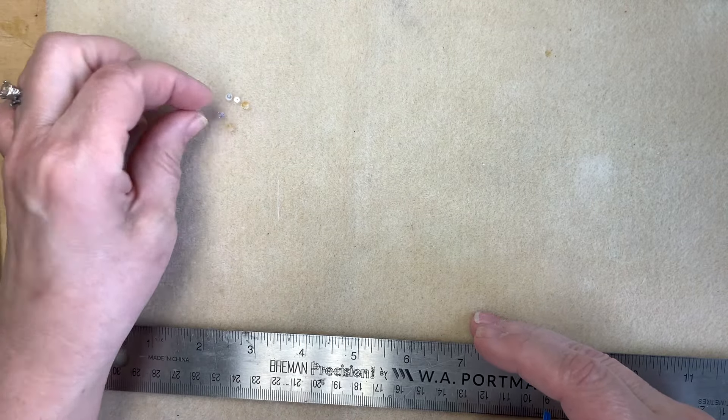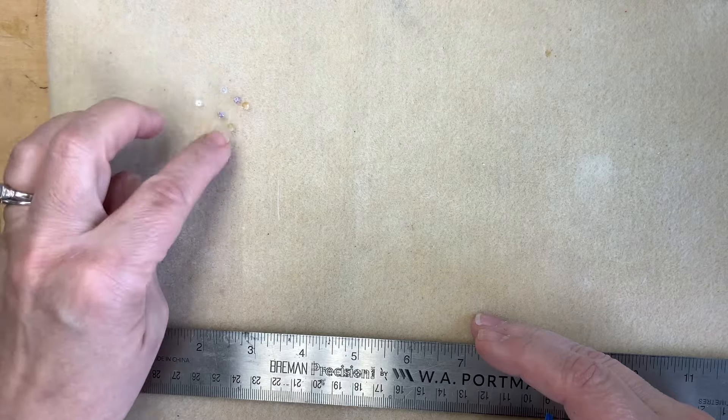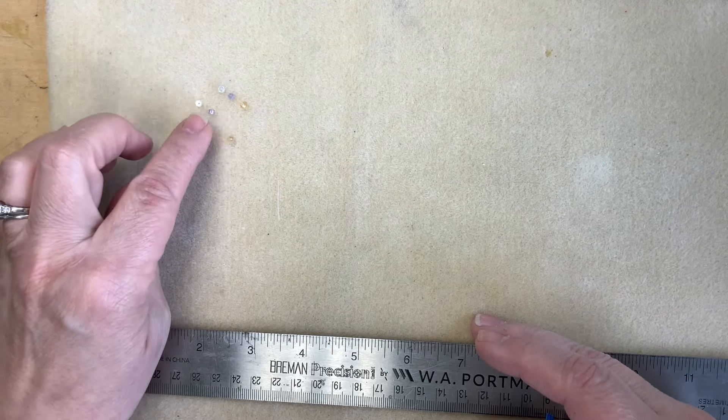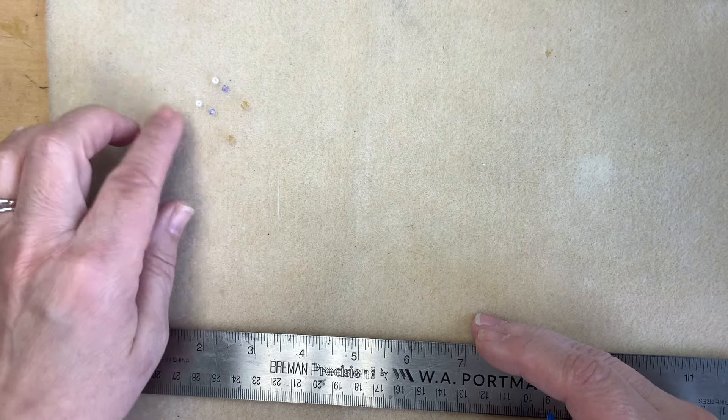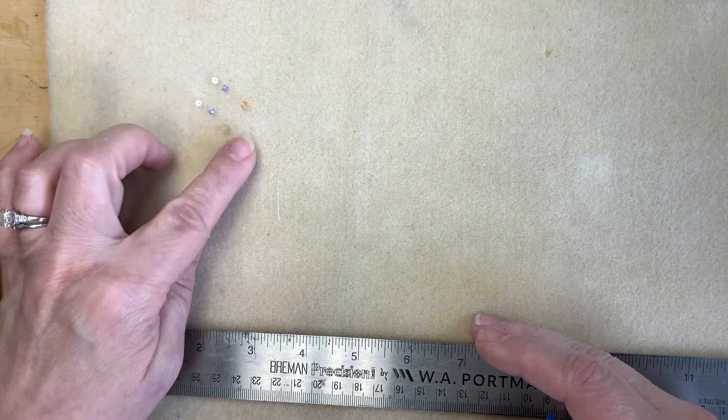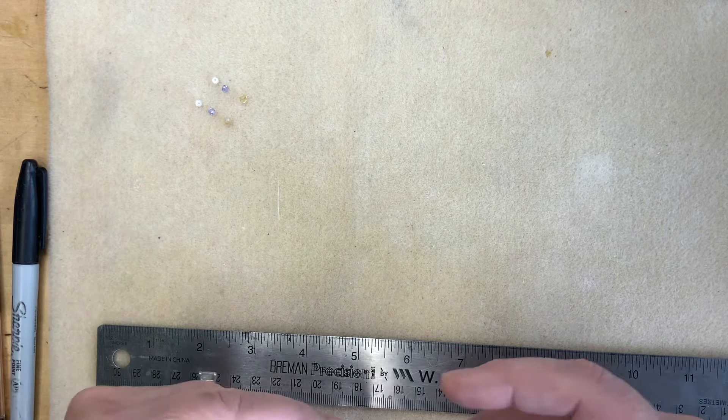I've got a clear cubic zirconium here for April. I've got this violet for June. You could also use moonstone, but I like the violet color a little bit better. I've got a couple citrines here for November. These are three millimeter.